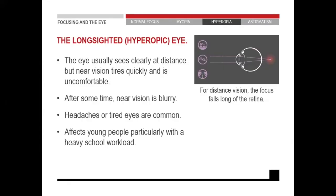Next, we're going to look at hyperopia. Hyperopia is when you can see clearly in the distance, but — and this is important to memorize — it does not mean that your near vision is blurry. Your near vision might be clear, but it will not be comfortable. The accommodation system in the eye can actually hide away a lot of the hyperopia, but after some time, the near vision will become blurry and the patient will experience headaches and tired eyes.